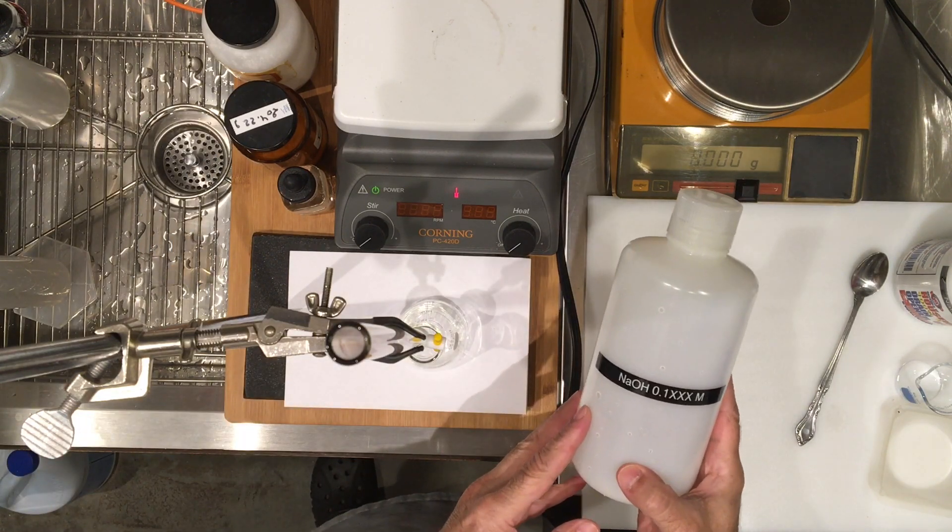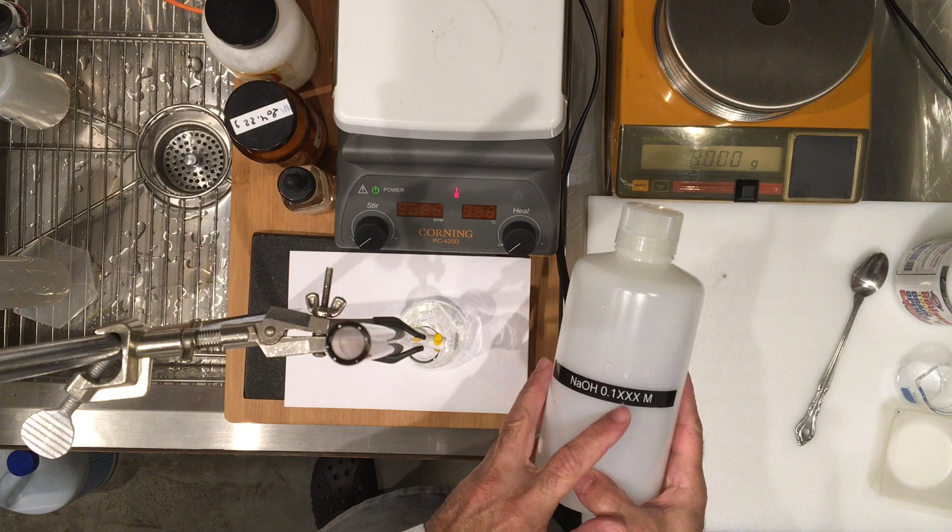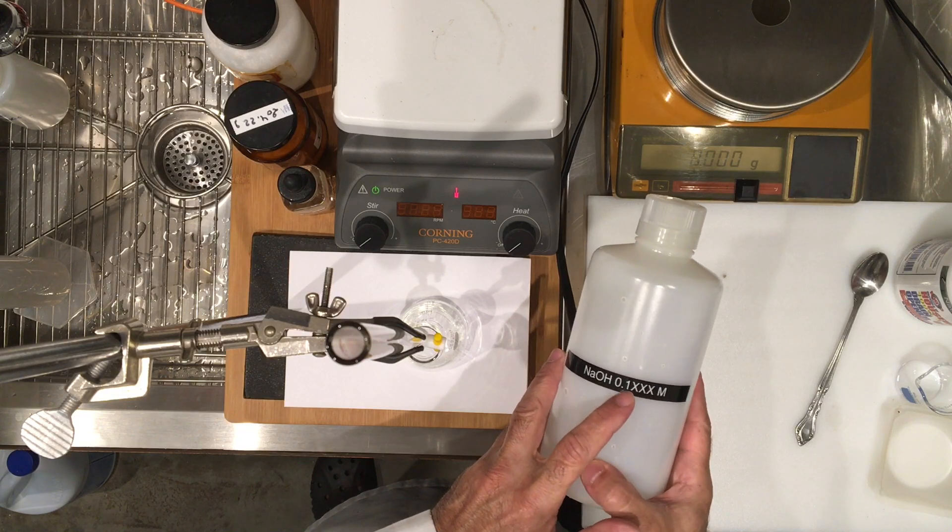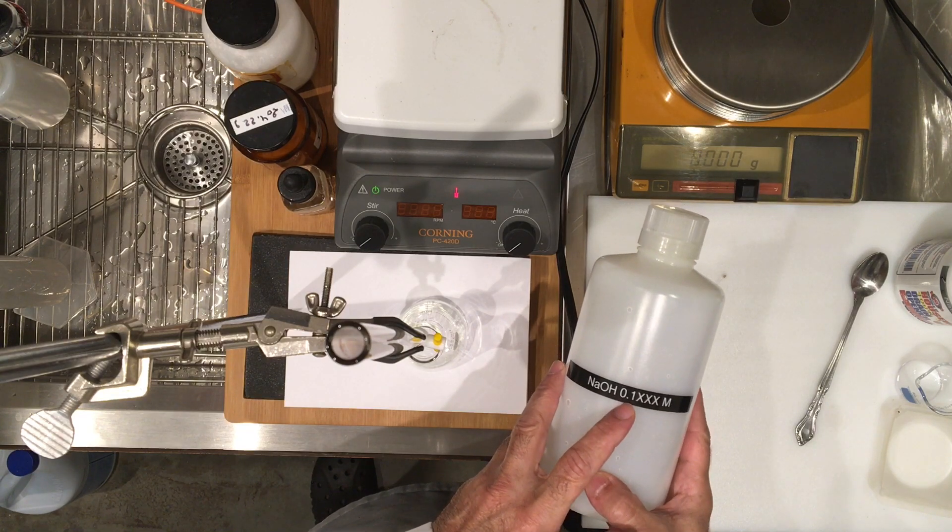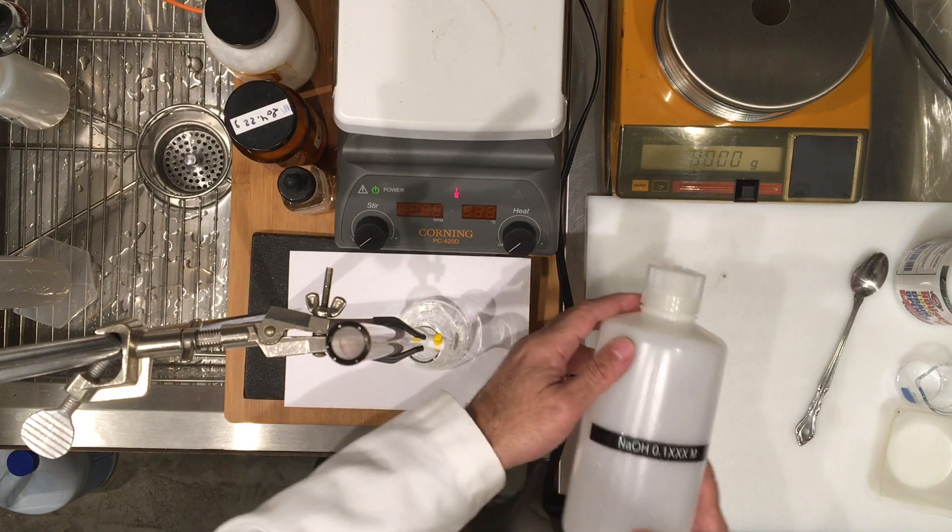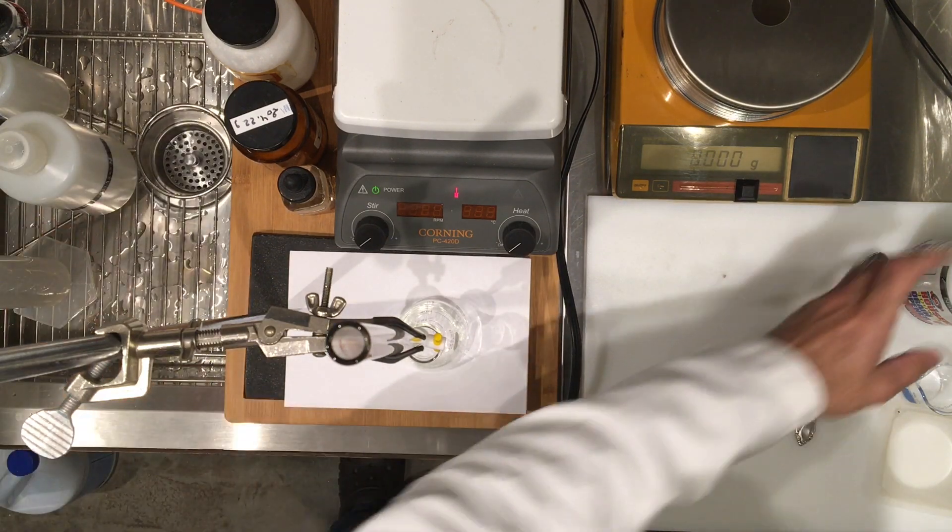I've prepared a bottle for it and notice that I've X'd out the other digits that I don't know. So my first step is to prepare a roughly 0.1 molar concentration.